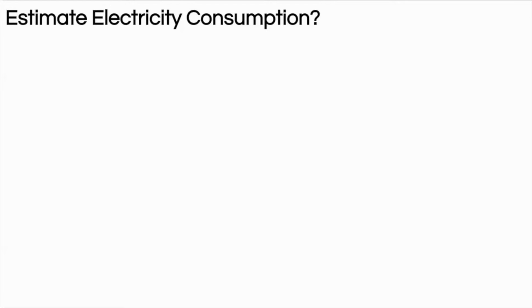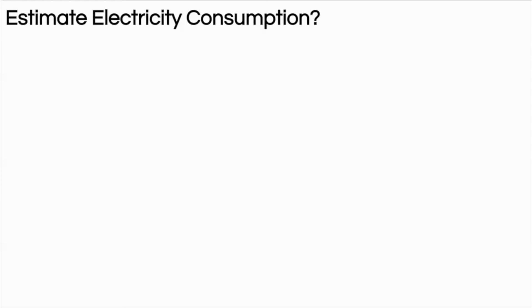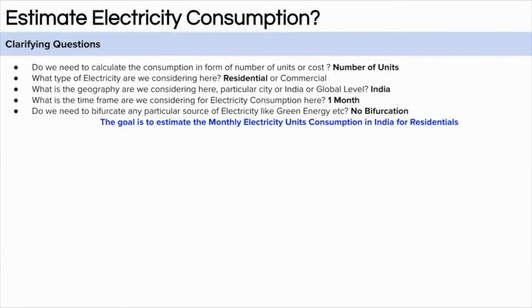I am giving you 5 seconds to think about the question and have some initial approach ready. I hope you have an approach ready to tackle this question. First, let's start with the clarifying questions. The first question we can ask is whether we need to give the answer in terms of number of units consumed or cost of the electricity consumed. This will determine the final form of our answer. Let's assume we are thinking about number of units of electricity consumed.